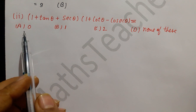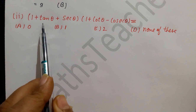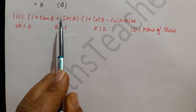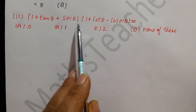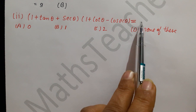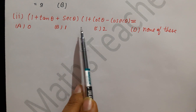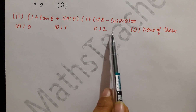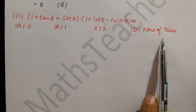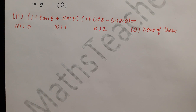Second part, question number 4: (1 + tan θ + sec θ)(1 + cot θ − cosec θ) equals what? The options are: A is 0, B is 1, C is 2, and D is none of these. We will now solve it and determine which option is correct.